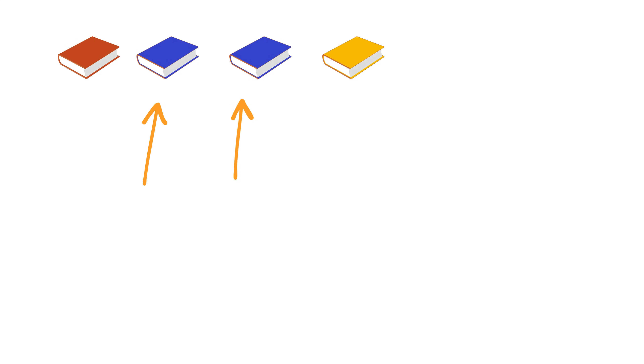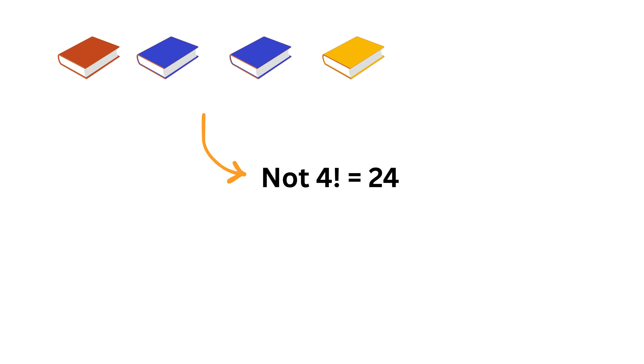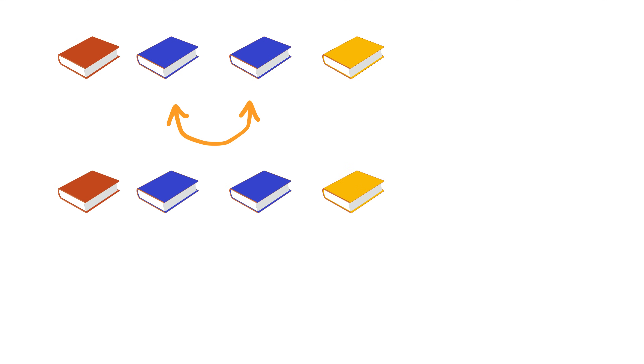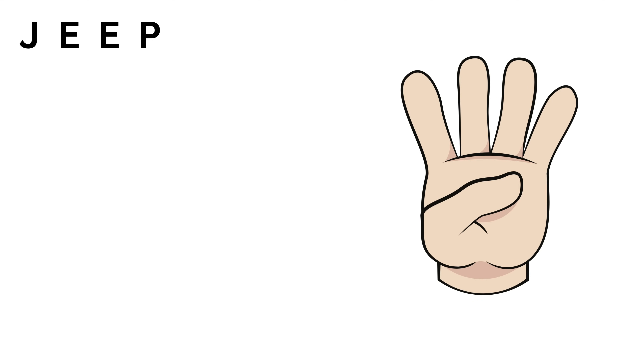Sometimes in permutation problems, some objects are identical, and this changes the total number of arrangements. When objects are identical, swapping them does not create a new arrangement. If we ignore this, we would count many arrangements more than once, giving a wrong answer. To see this clearly, consider the word J-E-E-P. It has 4 letters in total. How many unique words can we form from these 4 letters?